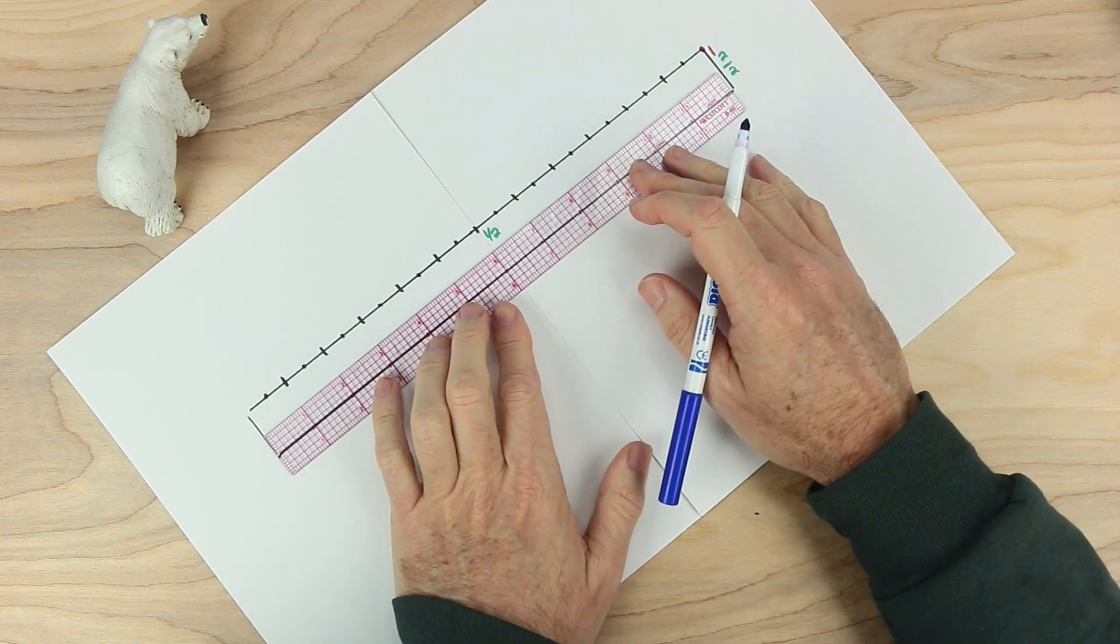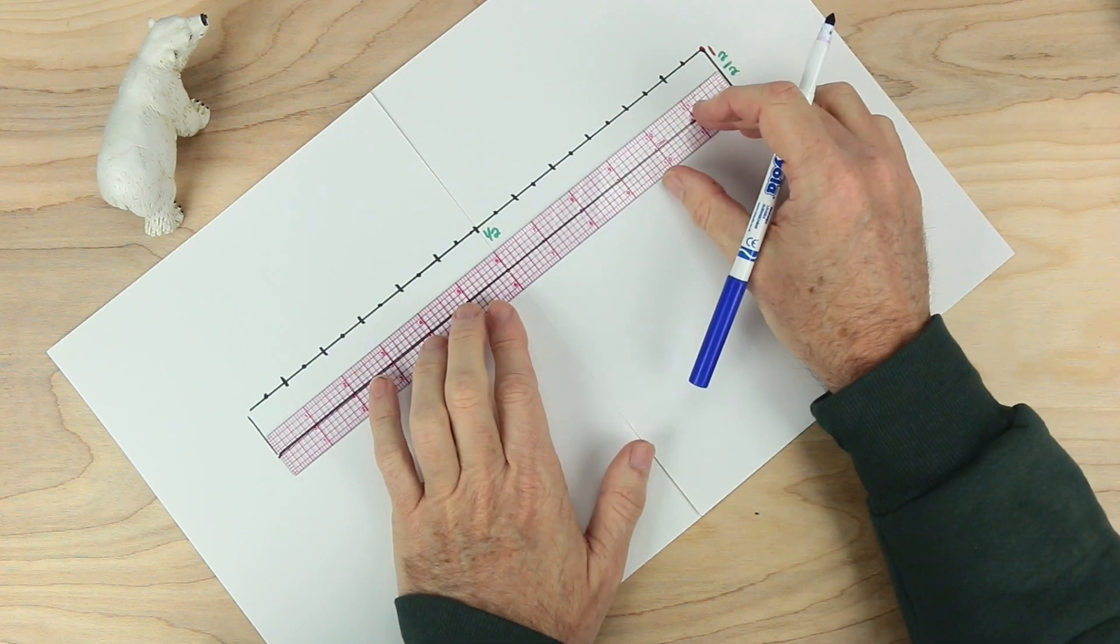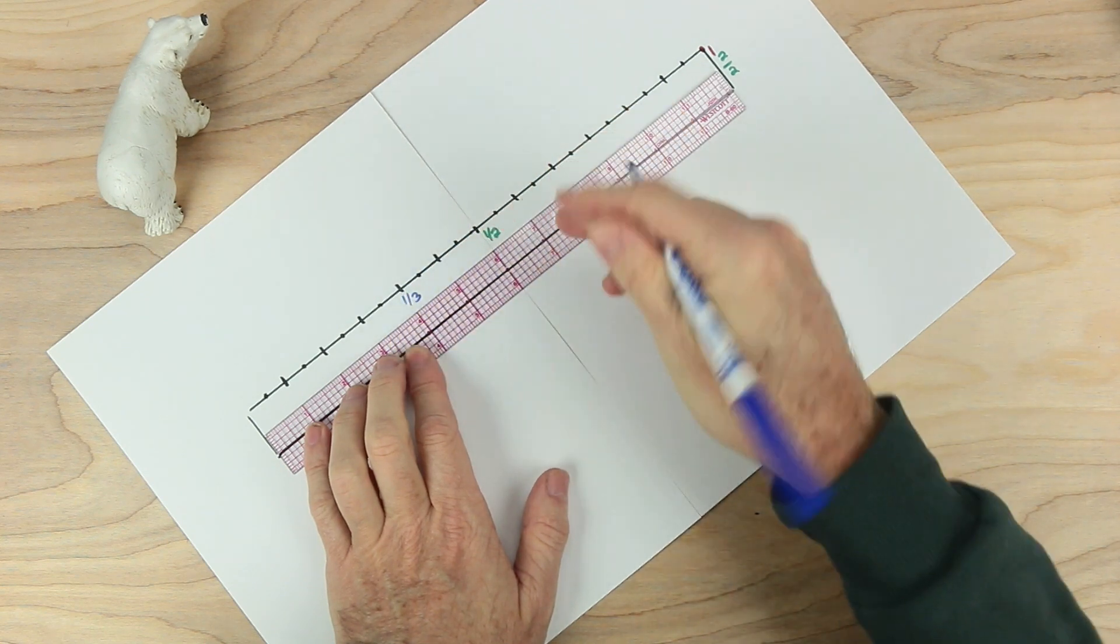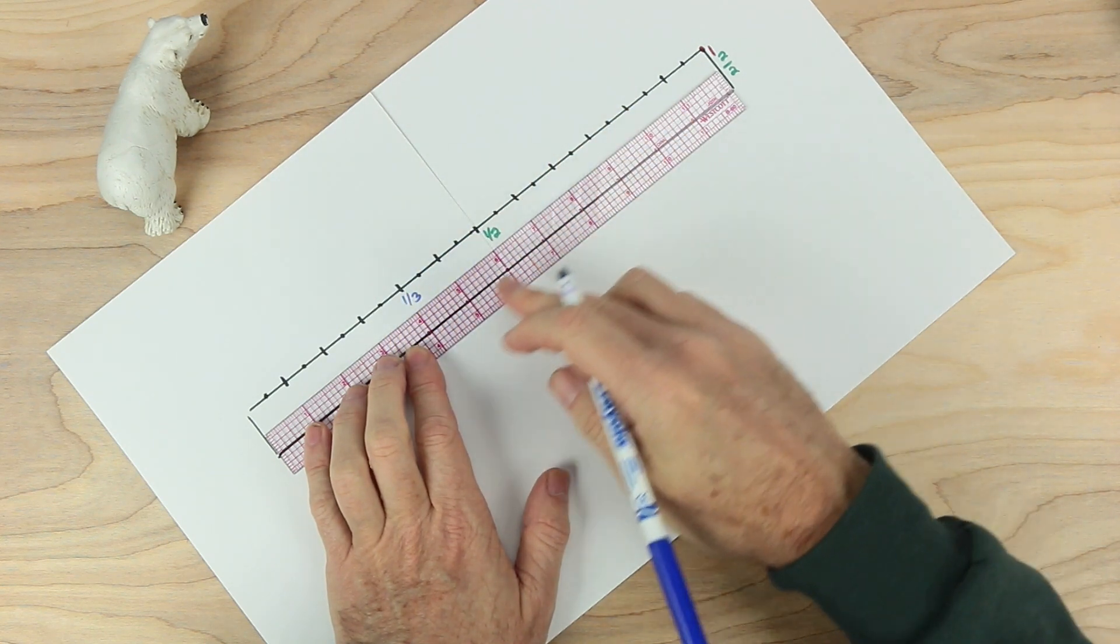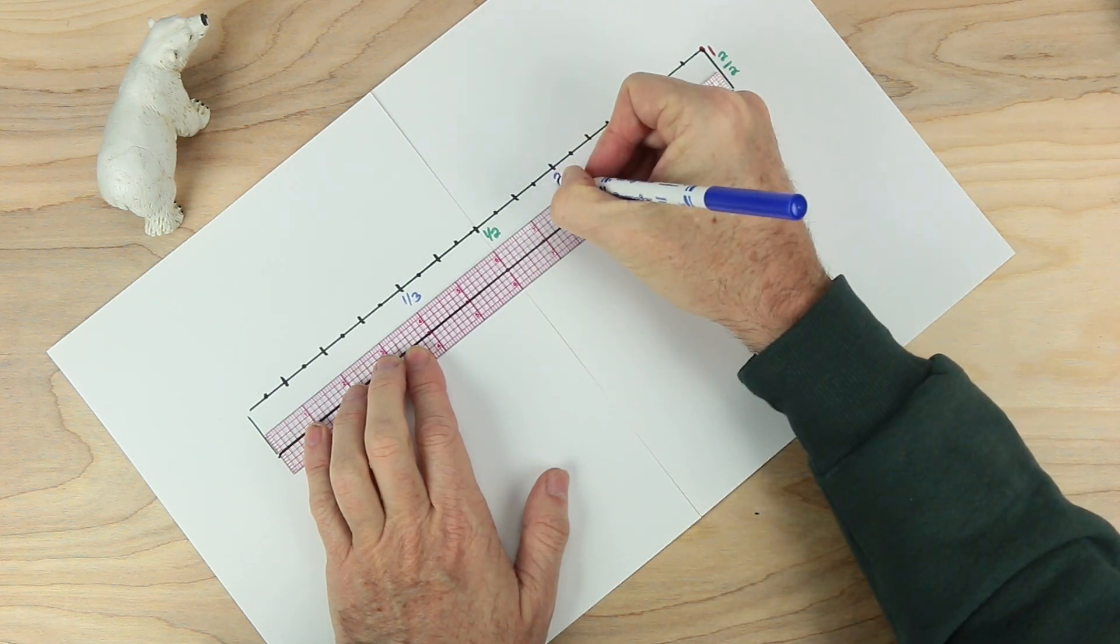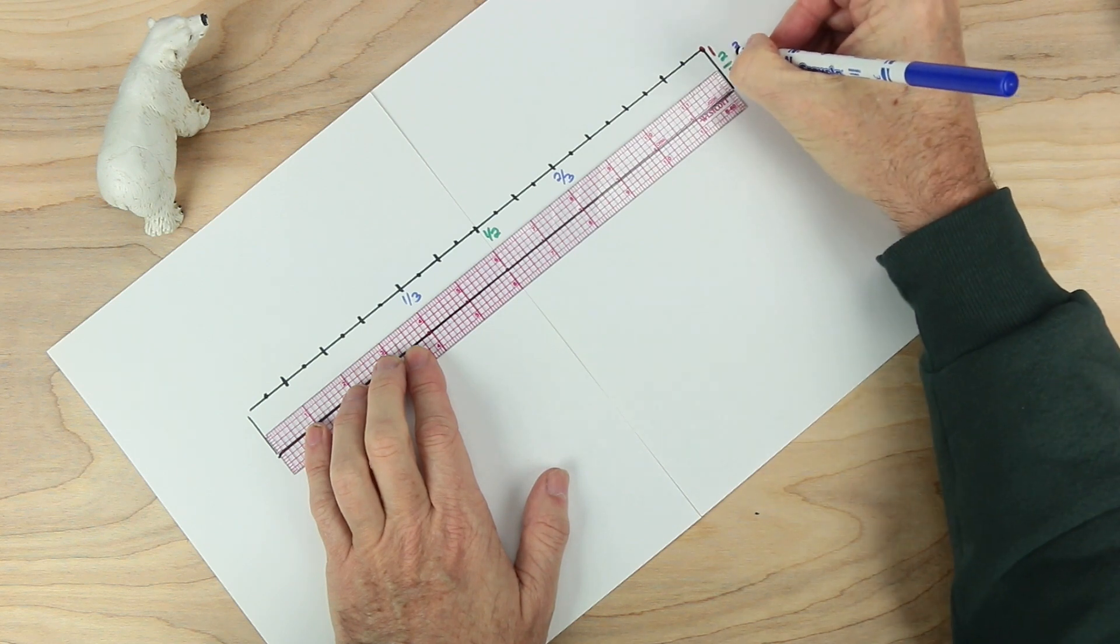The one is also going to be two halves. Now I'm going to think about thirds. If they're twelve inches, a third of twelve inches is four inches. So I'm going to write right here one third. Two thirds is going to be four and four more. So two thirds will be right here. And the whole ruler will be three thirds.